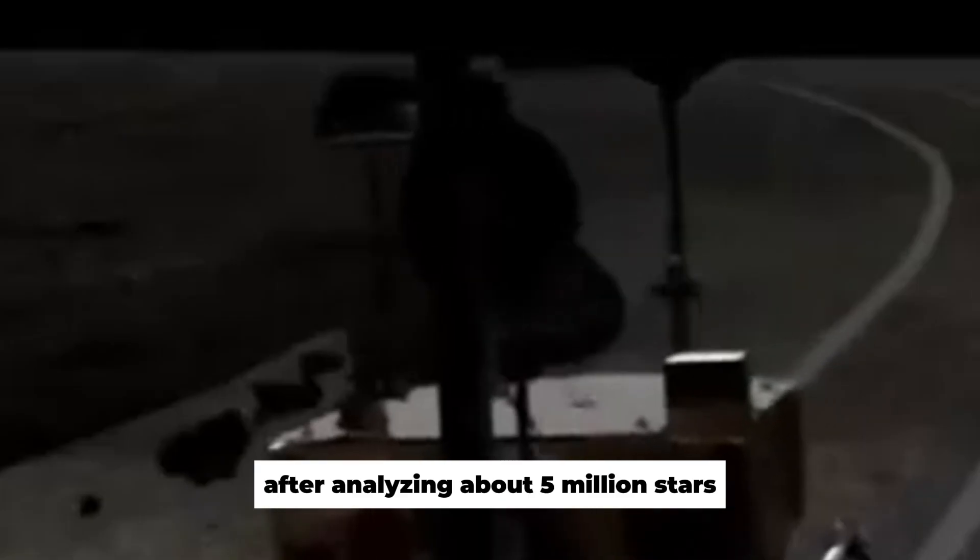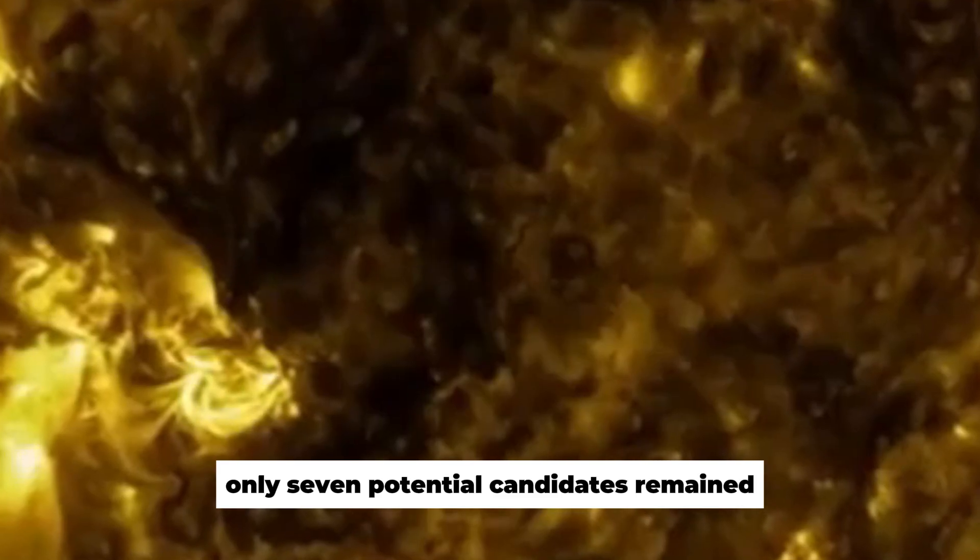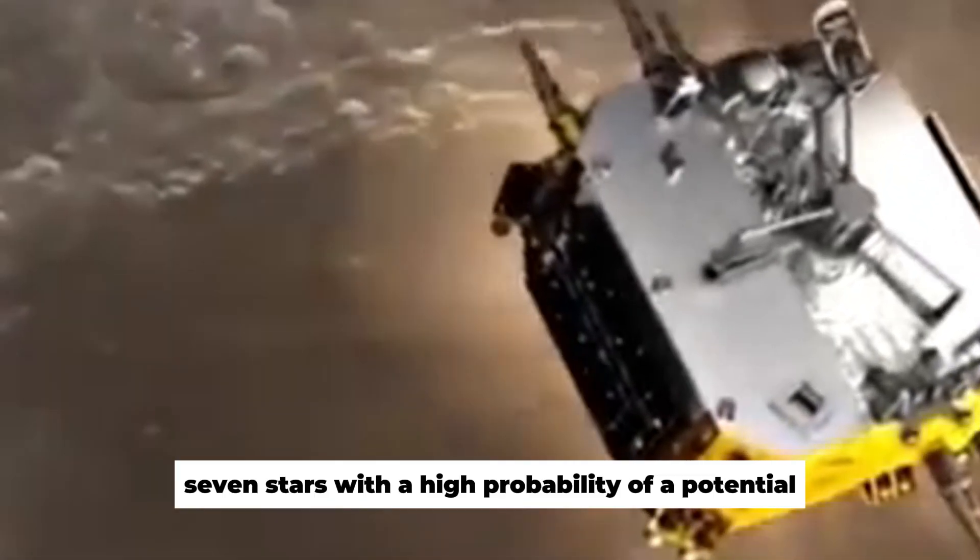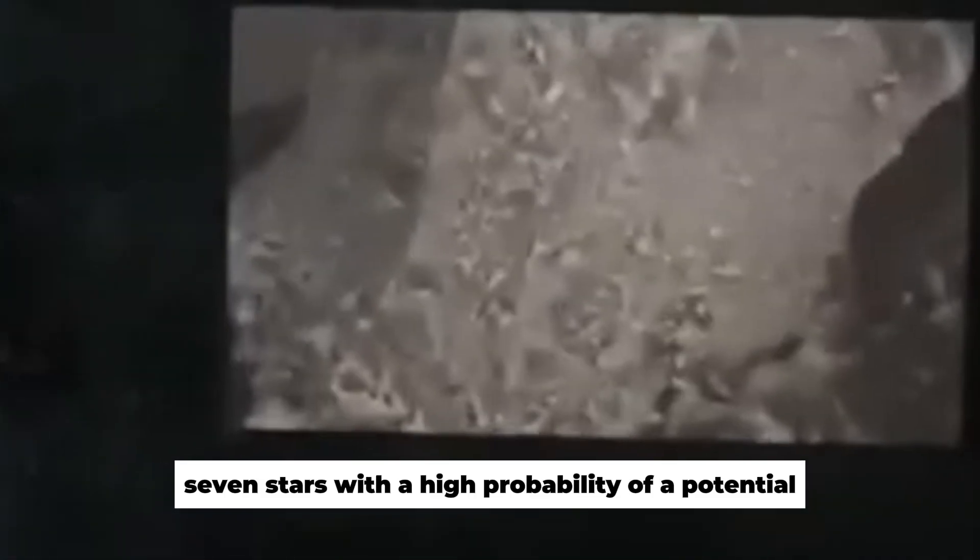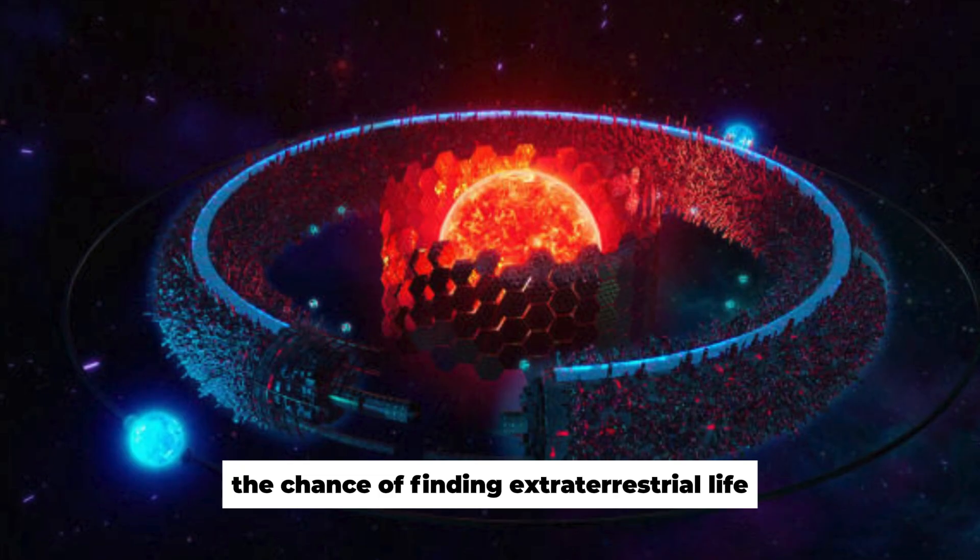After analyzing about 5 million stars, only 7 potential candidates remained. The results sound sobering at first, yet it is a sensation. 7 stars with a high probability of a potential Dyson sphere means 7 times the chance of finding extraterrestrial life.